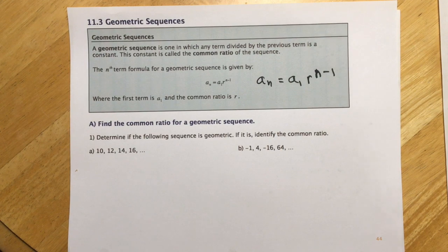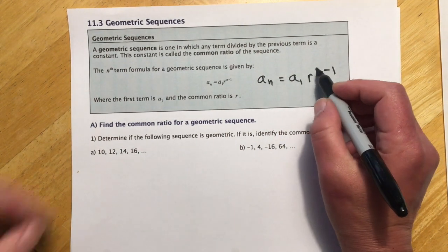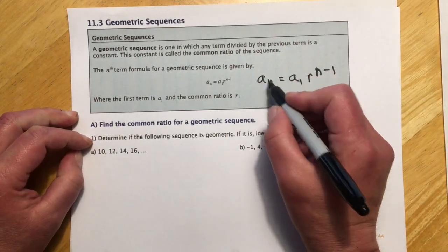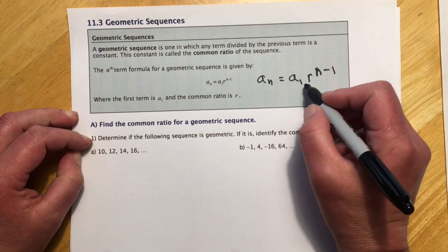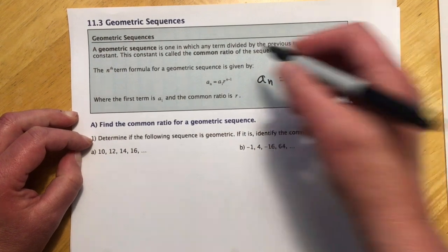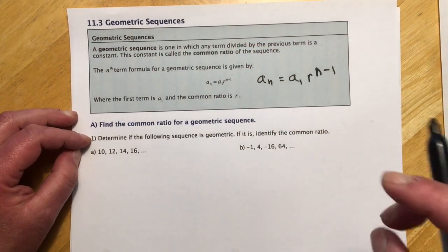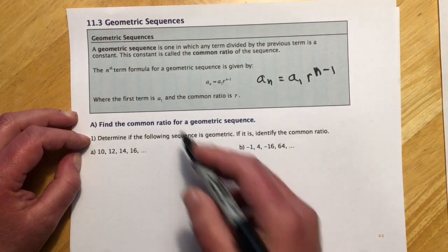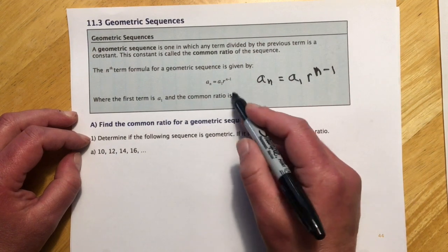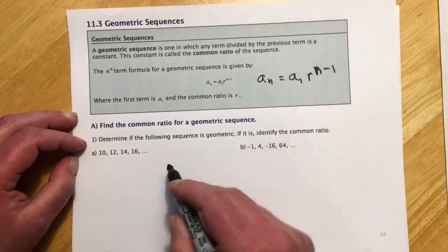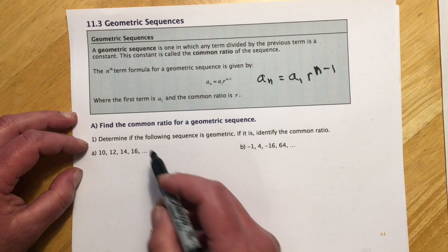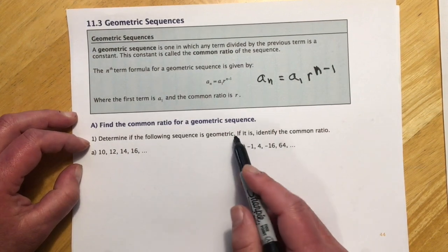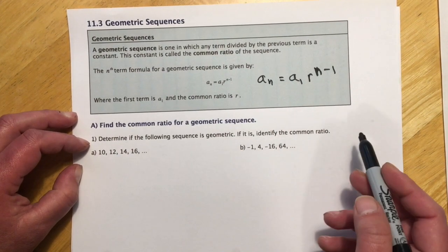And so this one, we also have an nth term, and I wrote it bigger, but I didn't write my n very good. So this is a sub n equals a sub 1 times r, and what r is going to be is a common ratio this time instead of a common difference. And then n minus 1. And a sub 1 is still the first term. And then the common ratio, I'll show you what that looks like down here in this example. So determine if the following sequence is geometric. If it is, identify the common ratio.